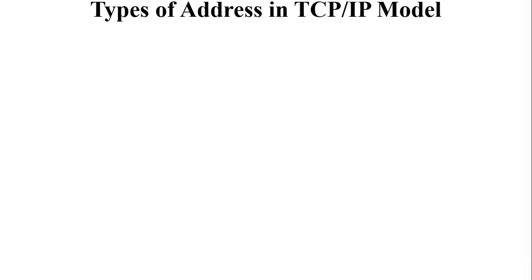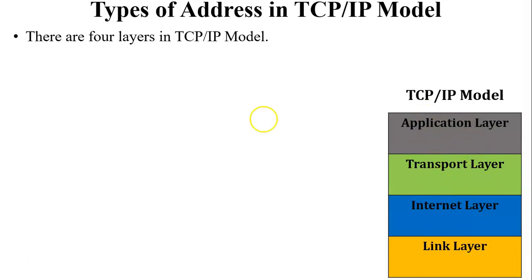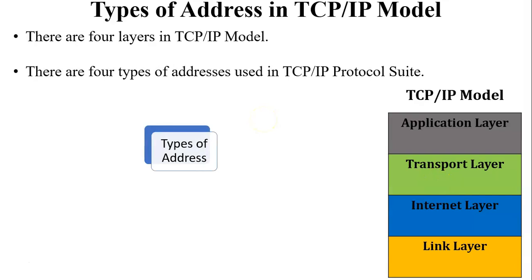We all know that there are four layers in the TCP/IP model. As seen in this diagram: application layer, transport layer, internet layer, and link layer. There are four types of addresses used in the TCP/IP protocol suite.